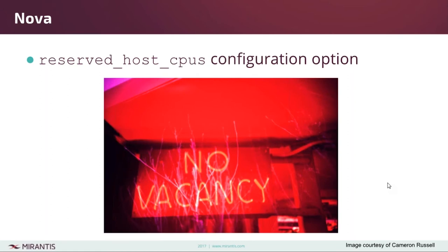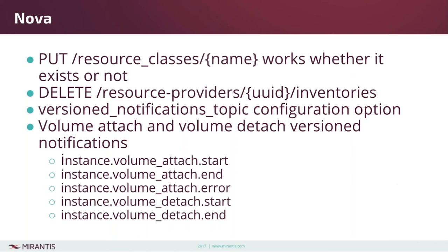On a multi-CPU system you can now specify that you want to reserve a certain number of CPUs just for the host OS so that the host OS itself runs properly. Also, it used to be that before you could add or change a resource class you had to check whether it existed, then do a POST if it didn't or a PUT if it did. Now you can just do a PUT and if it doesn't exist it will be created automatically.